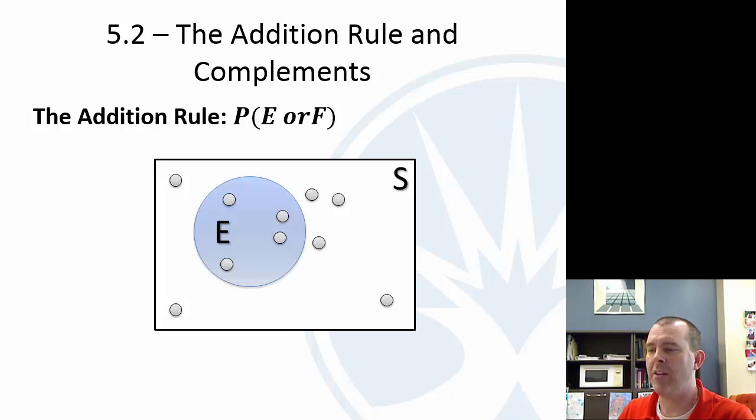So we're going to define event E to be the event, this is kind of made up here, but that contains these four dots. The dots are the simple events. So event E contains four simple events. And then we'll call event F, that one over there, the red one, it contains those five events.